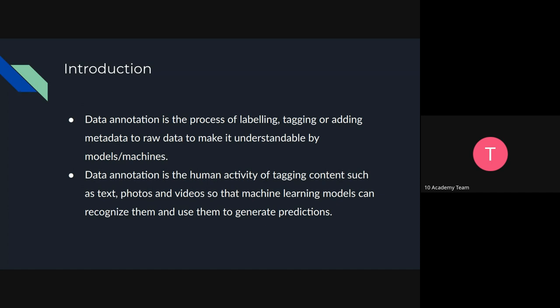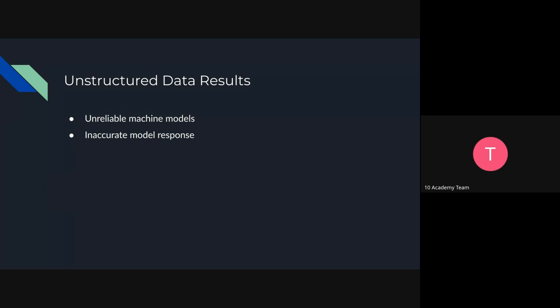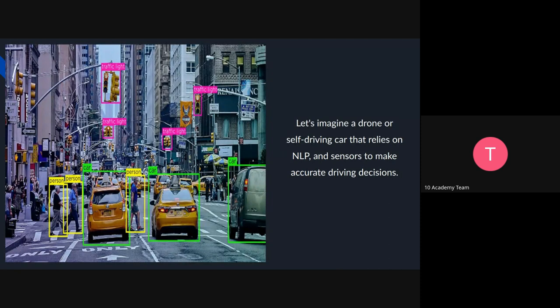Data annotation is even a job position. There are data annotators out there who work in this field. It's a human activity of tagging content such as text, photos, and videos, so that machine learning models can better recognize that data and use it to generate predictions. That is the main idea behind data annotation.